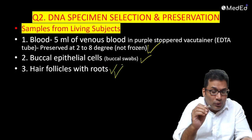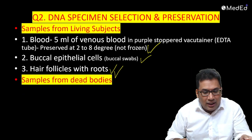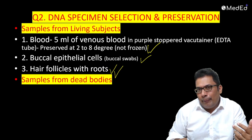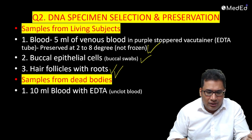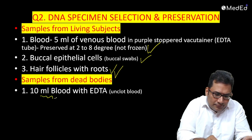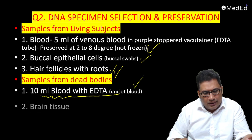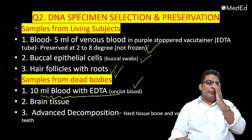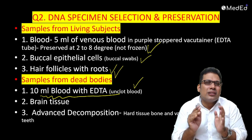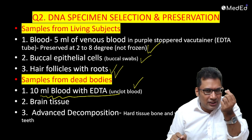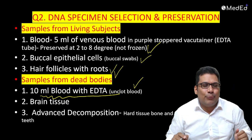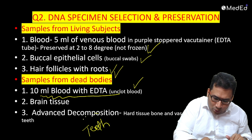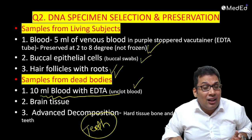Hair follicles with the root - the root is important as it contains DNA genetic material. For samples from dead bodies, especially decomposed bodies or mass disaster skeletal remains: in dead bodies you can use 10 ml of blood, unclotted blood with EDTA, or brain tissue. In advanced decomposition, remember you can preserve bones - the best specimen is the molar teeth, which consists of enamel that resists advanced decomposition and contamination is very minimal. So molar tooth is the specimen of choice in advanced decomposition.